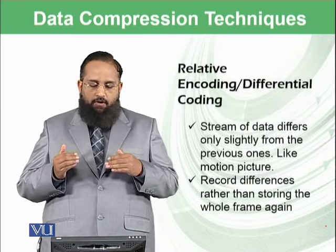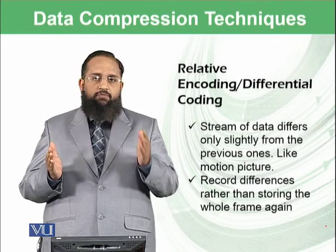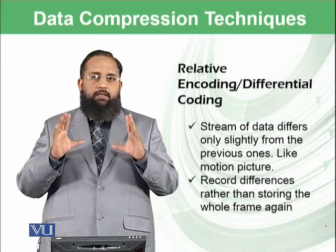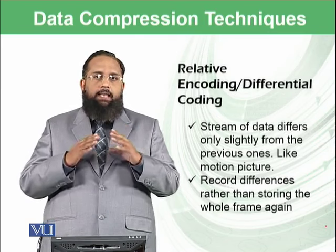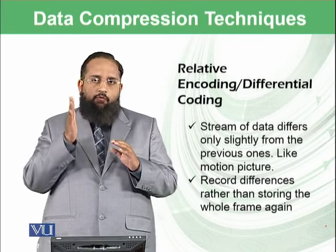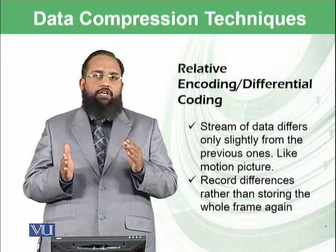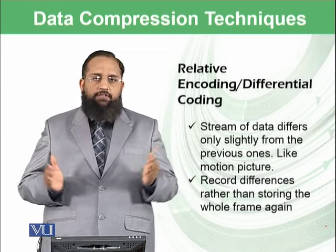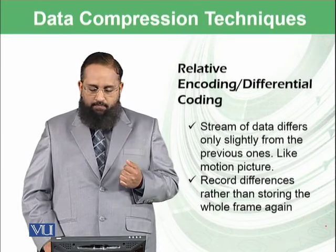There is another approach called relative encoding or differential encoding. A stream of data differs only slightly from the previous one. For example, in a motion picture, if you want to compress a video, you know that video is constructed from a number of small frames of images. You just need to store the difference between frame zero and frame one, then the change from frame one to frame two. You just save the change, and the whole picture can be stored once. Record differences rather than storing the whole frame again.